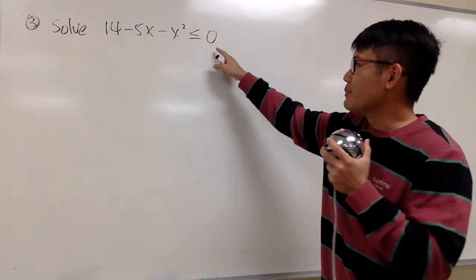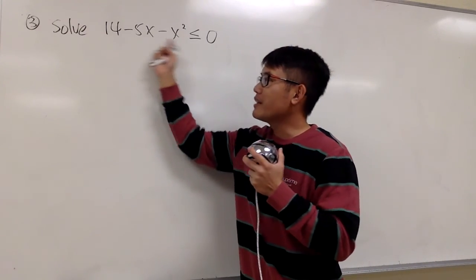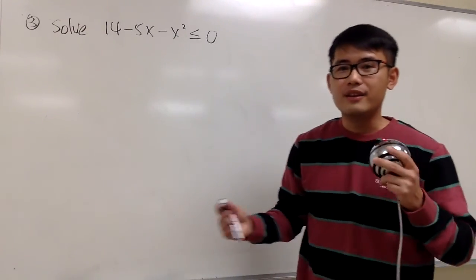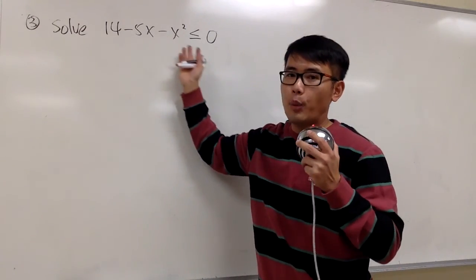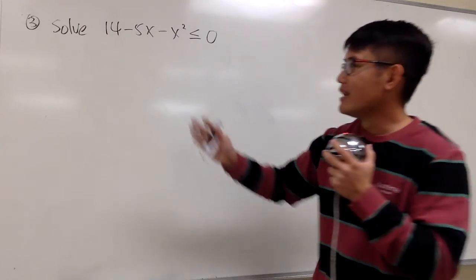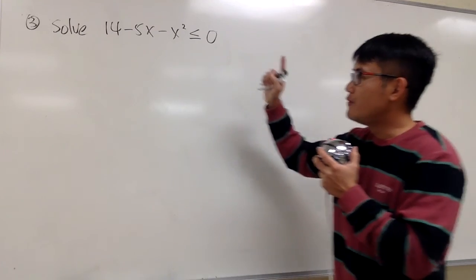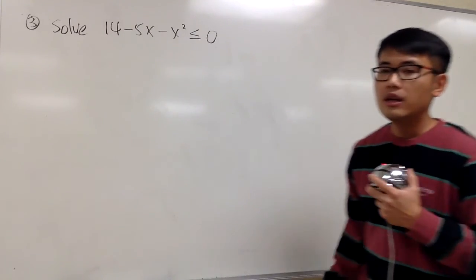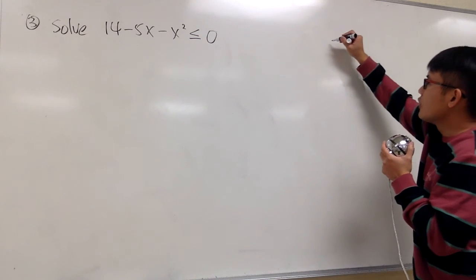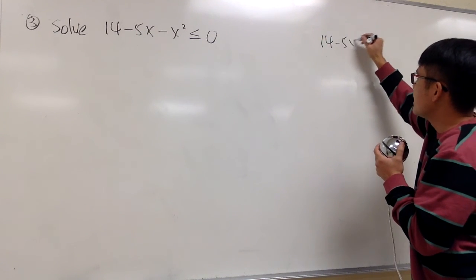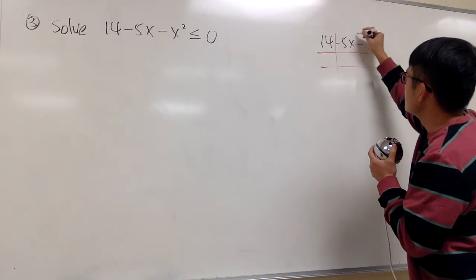It's good because we have a 0 on one side already, but this is also kind of strange because this is not in the standard form. It's okay — we can just go ahead and factor the way it is, or if you'd like, you can rearrange it and factor it — up to you. I'm just going to factor it the way it is and I'm not going to factor out any negative. So let me show you guys with the tic-tac-toe method: 14 minus 5x minus x squared.